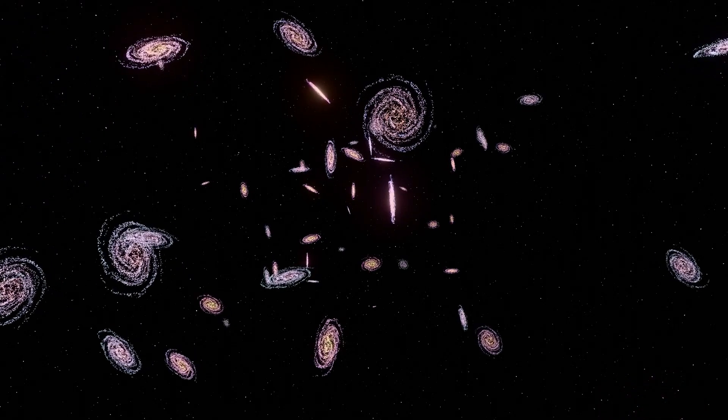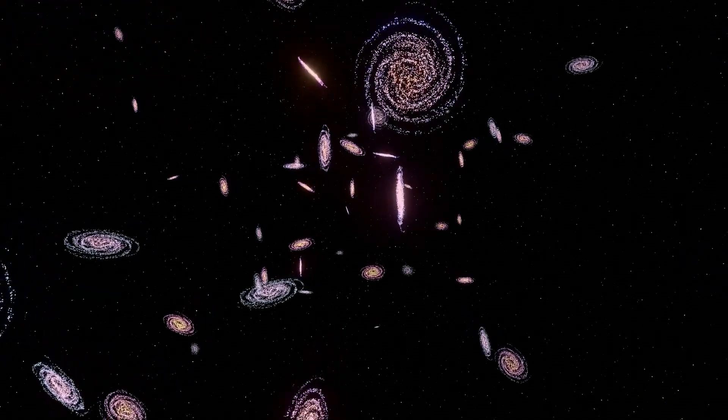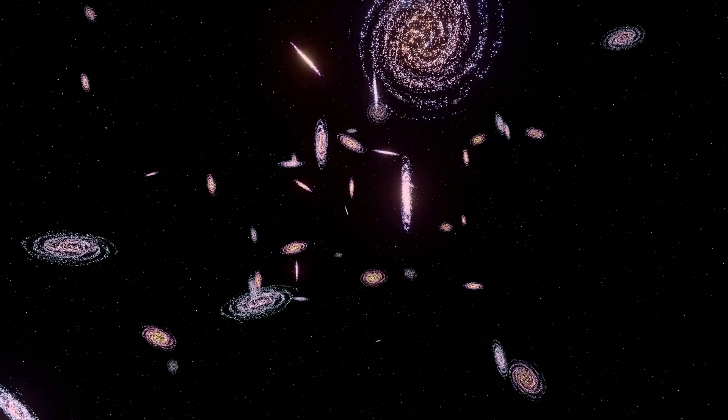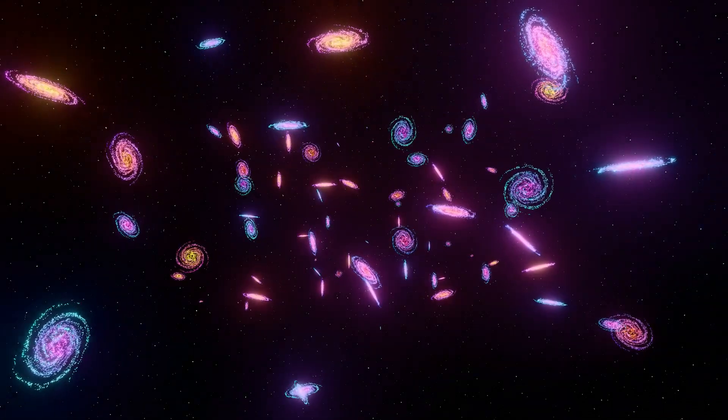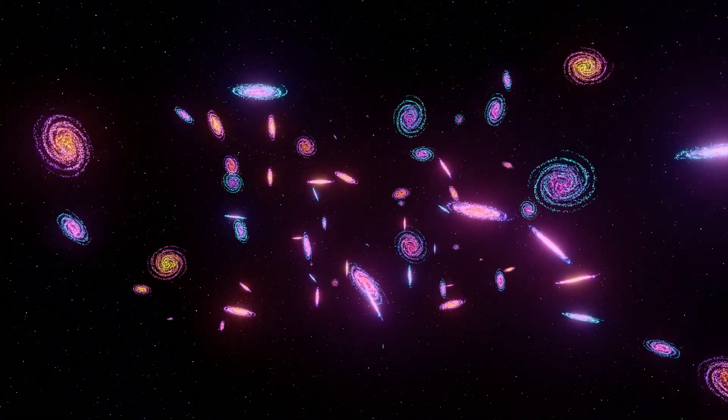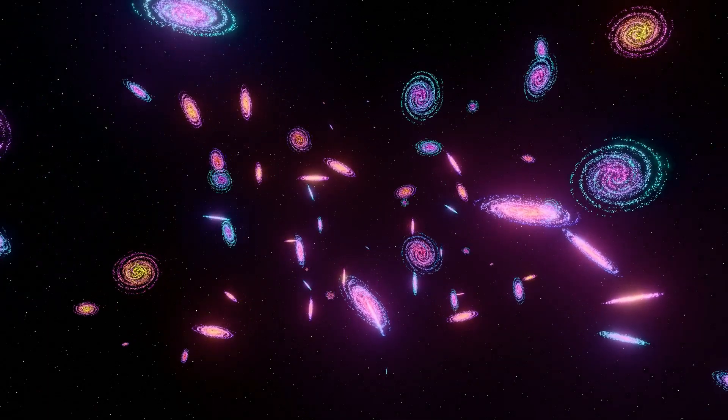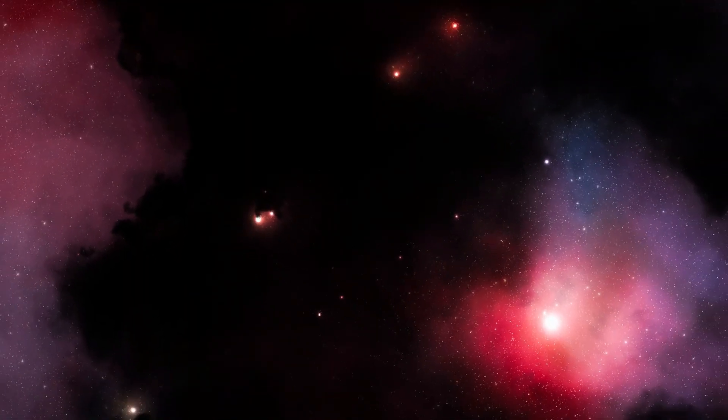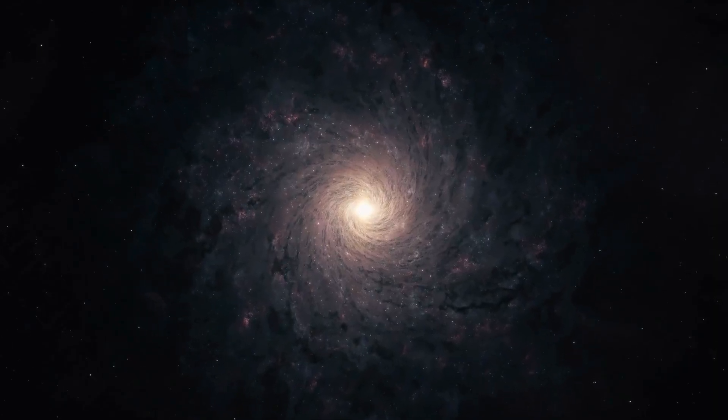Astronomers have long believed that the universe is relatively uniform, with matter spread evenly across the cosmos. This idea, known as the cosmological principle, is a cornerstone of modern cosmology. But what if this principle is wrong? What if we're living in a cosmic anomaly, a region of space that's almost entirely empty?